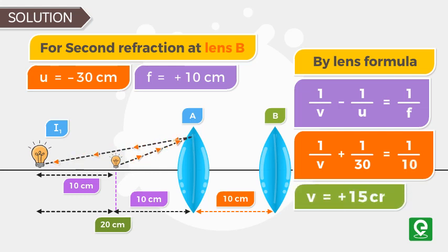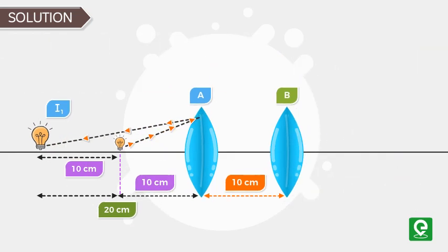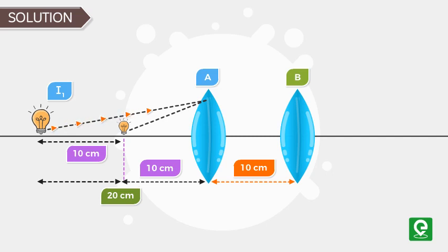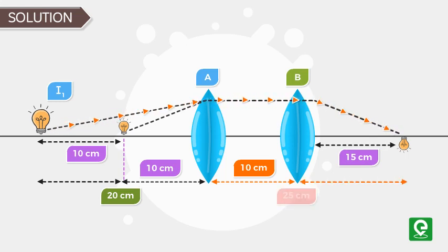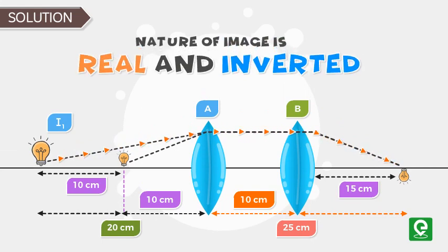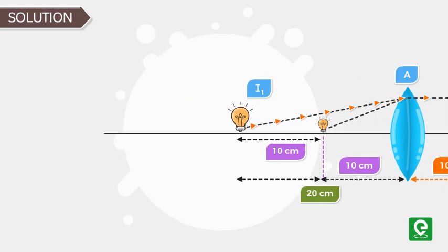On simplifying we get the value of V equal to plus 15 centimeter. Therefore the final image is produced at a distance of 15 centimeter to right side of lens B and 25 centimeter from lens A. Nature of image is real and inverted.